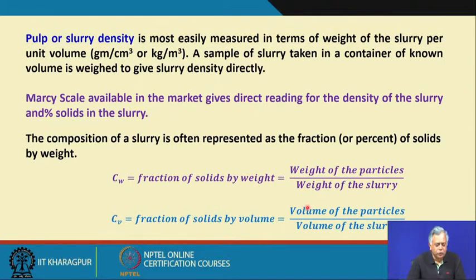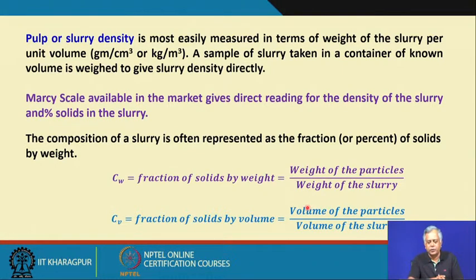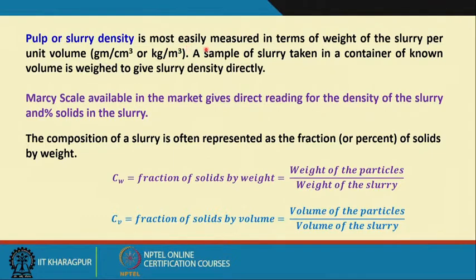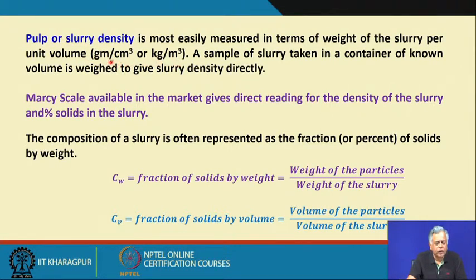We normally use the term pulp or slurry density. Slurry refers to a fine particle suspension — fine particles mixed with water — while pulp is in general your solid-liquid mixture. We need to know the density of that mixture, which has commonality with bulk density — that is, the weight of one liter of that mixture — and this gives us an idea about how much solid is present, which we can use for mass balancing.